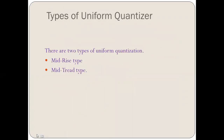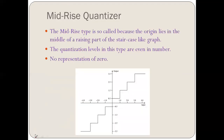When we talk about different types of uniform quantizers, there are two types: the first is called the mid-rise type and the second is called the mid-tread type. In the mid-rise quantizer, it is called so because the origin lies in the middle of a rising part of a staircase-like graph.